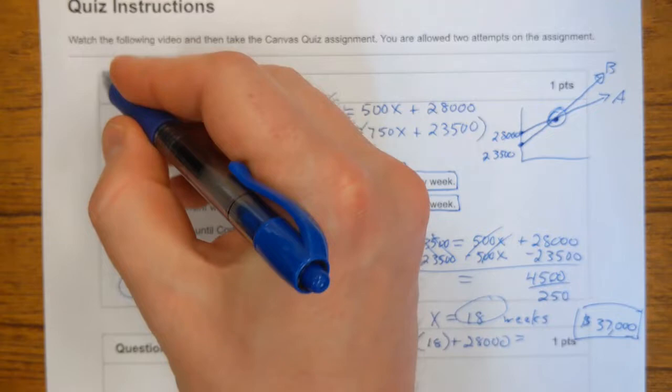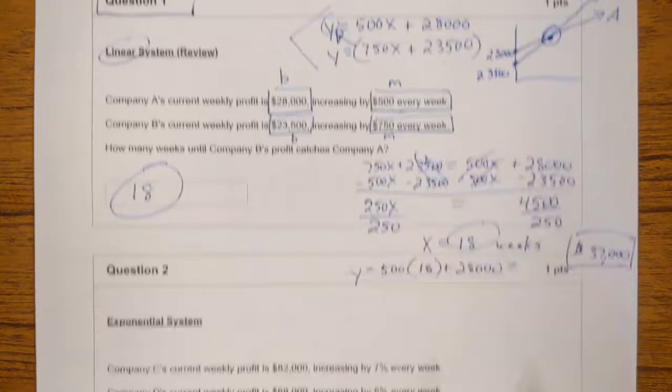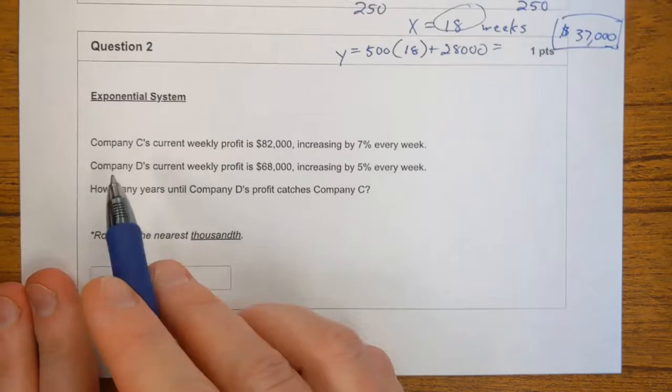Now, so this is a review. We've done problems like question one back in unit two, I believe. In previous units, I should say. So what about question two? What if we have exponential growth? And this is much harder, but I'm going to show you how to do it.